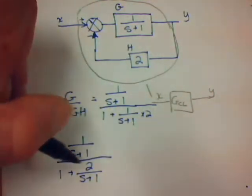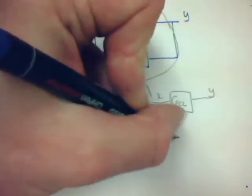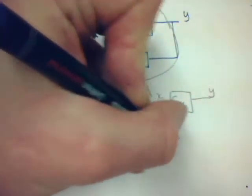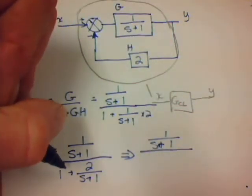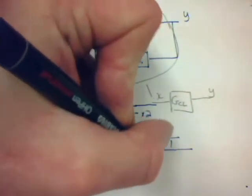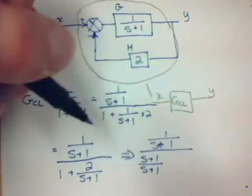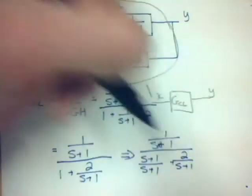To simplify the bottom, I've got 1 over S plus 1. The 1 has to have a common denominator. So to add these two together, I rewrite 1 as S plus 1 over S plus 1, and that will be added to 2 over S plus 1.